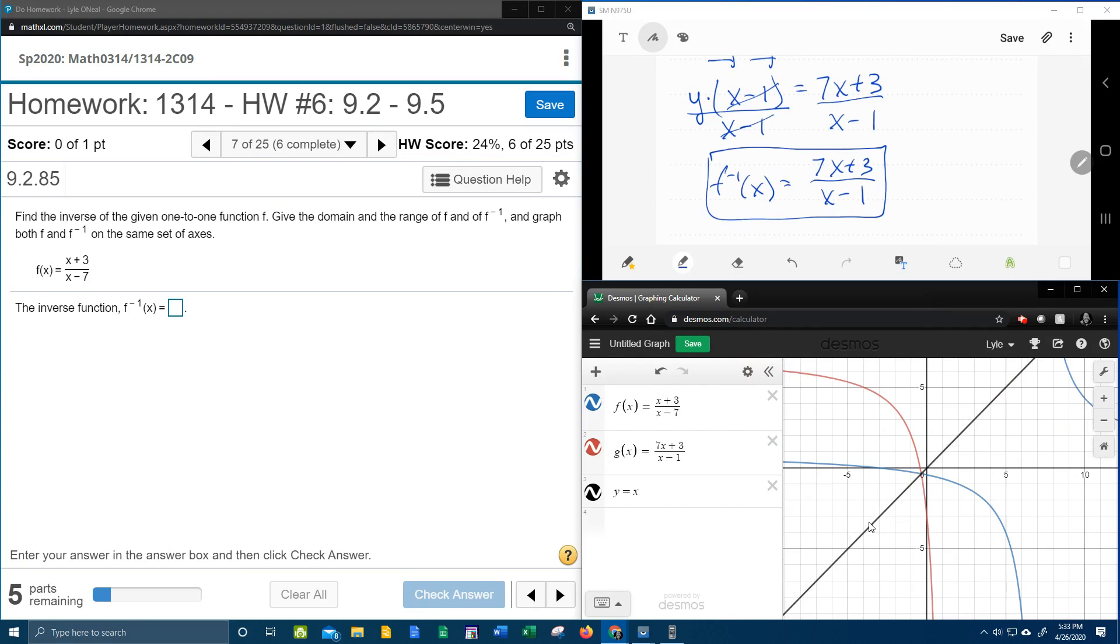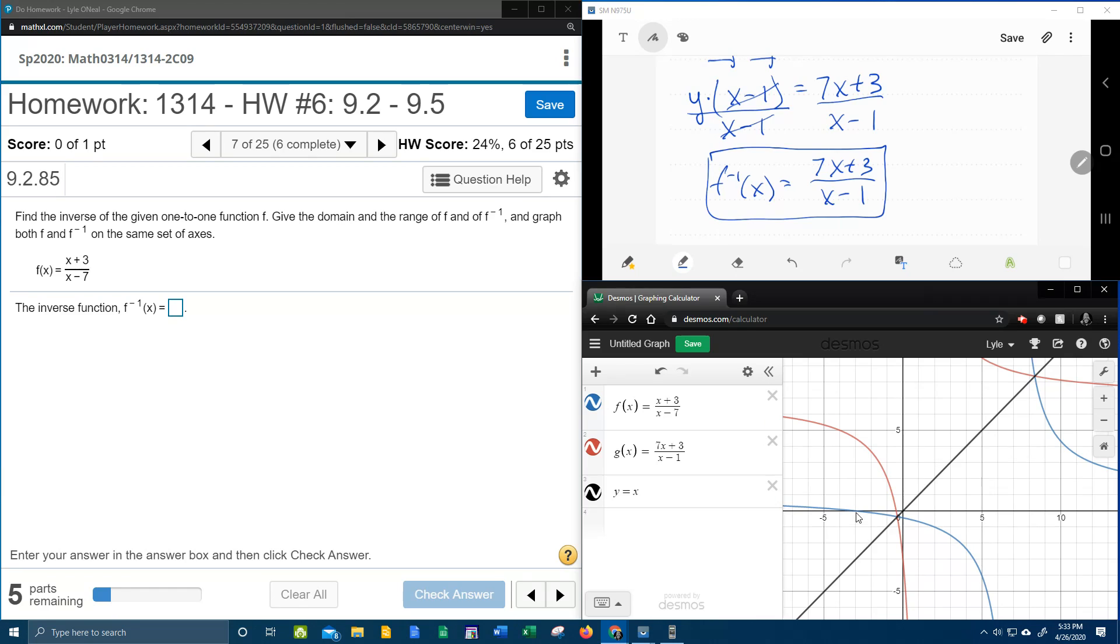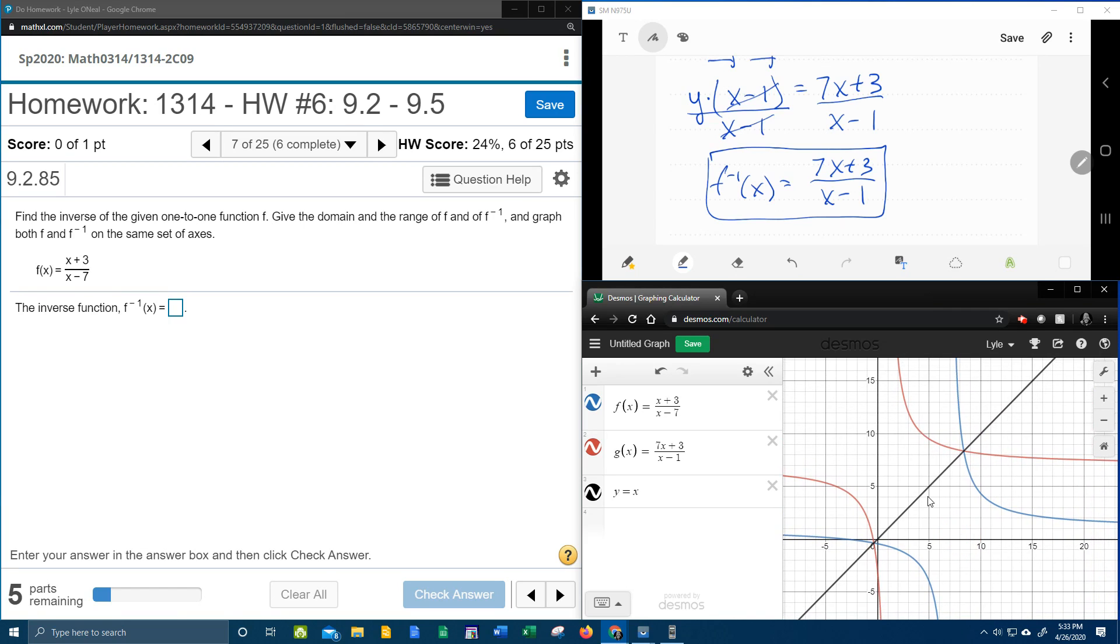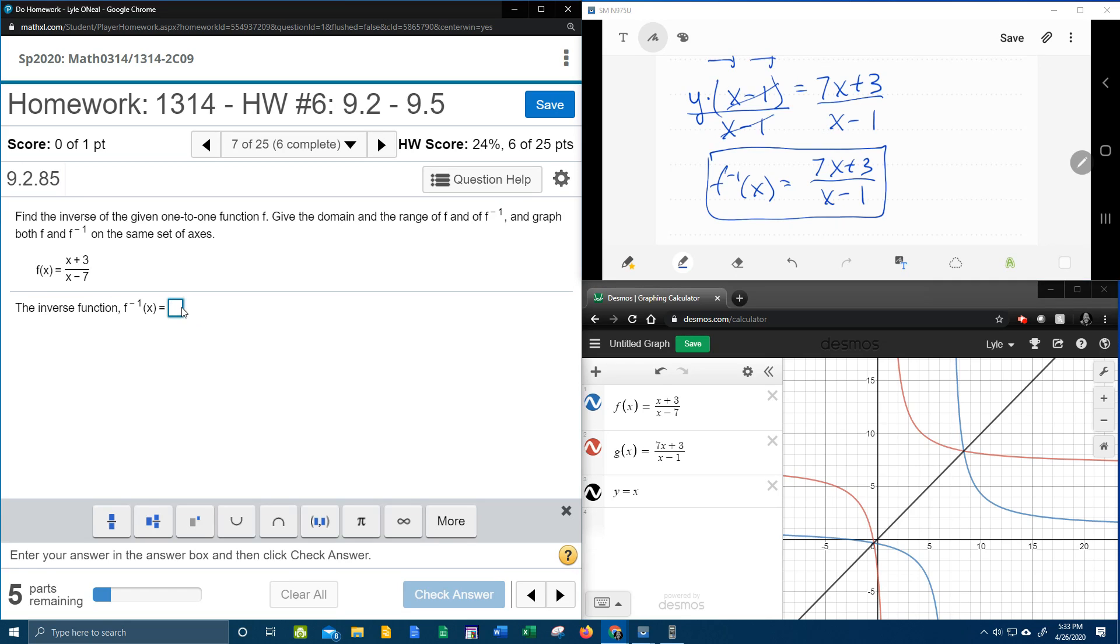So again, do you see that if I zoom in a little bit, do you see the symmetry there? That this black line, y equals x, cuts the blue and the red right down the middle. You've got to almost tilt your head sideways to see the symmetry that it cuts it right down the middle. So that means that this g of x is the correct inverse function.